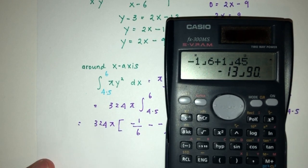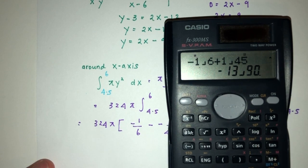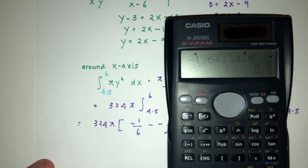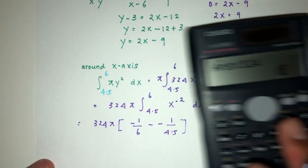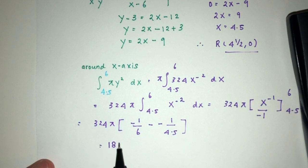Minus 1 over 6 plus 1 over 4.5 multiply by 324, that should be 18. So we get 18 pi cubic units for the volume of the shape.